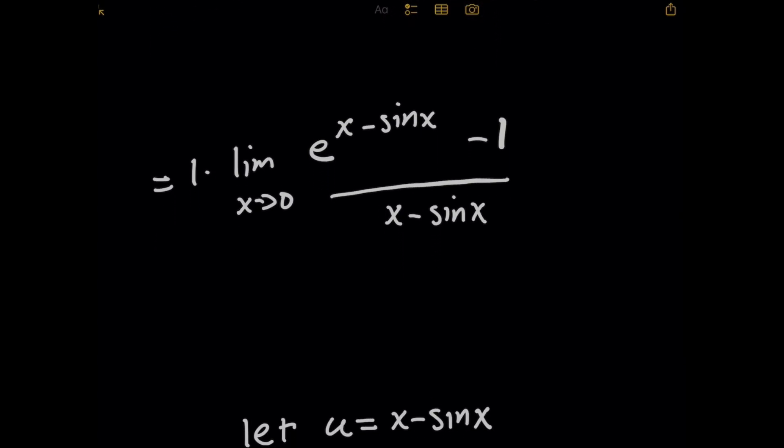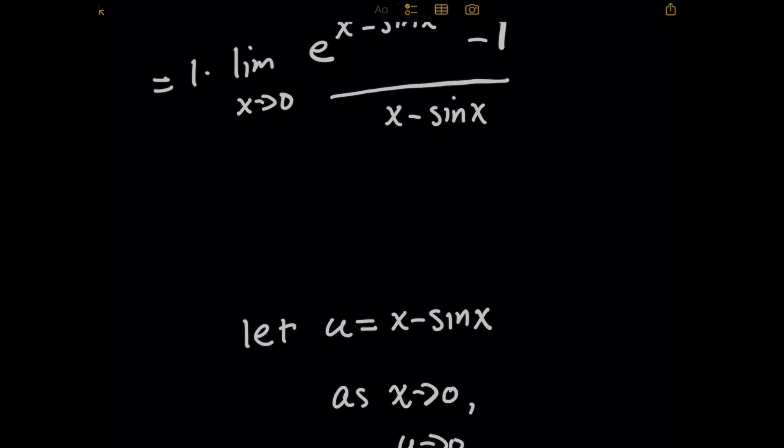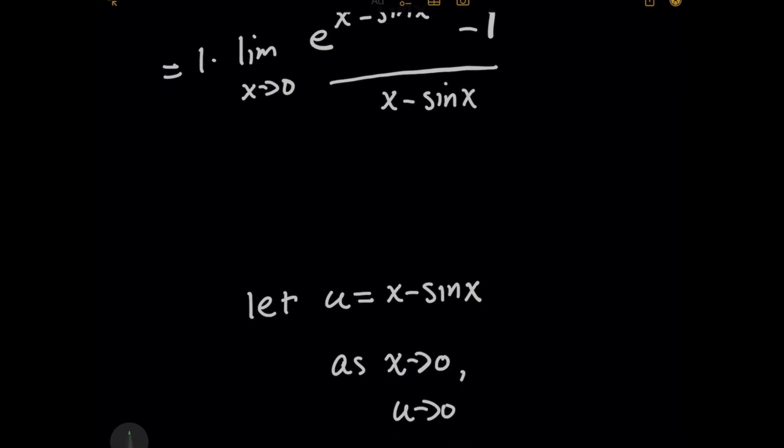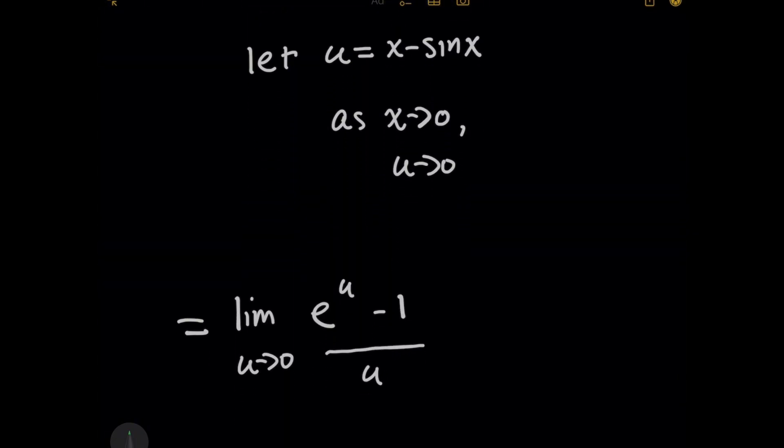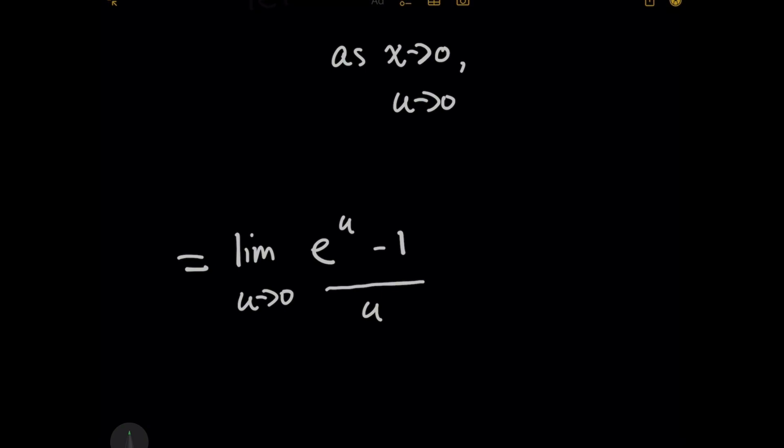And you don't have to do this, but one thing that helps me visually and it's a cool trick for you to use is, why don't we just do a variable substitution here? I'm going to let u equal x minus sine of x. And then what we want to make sure is, because we're going from the letter x to the letter u, because x was approaching zero, we need to see what u is going to approach. And in this case, when you plug in zero for x, you will get zero minus the sine of zero, which tells us that u will also be approaching zero as well.